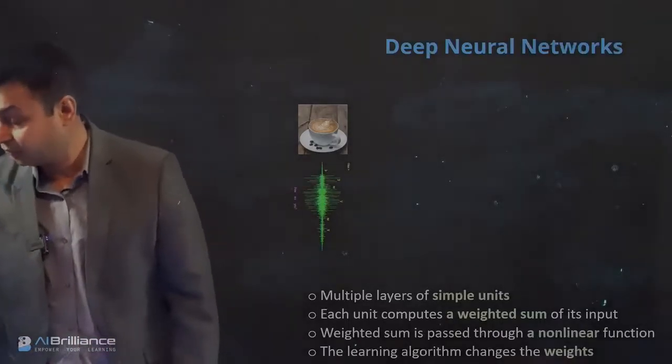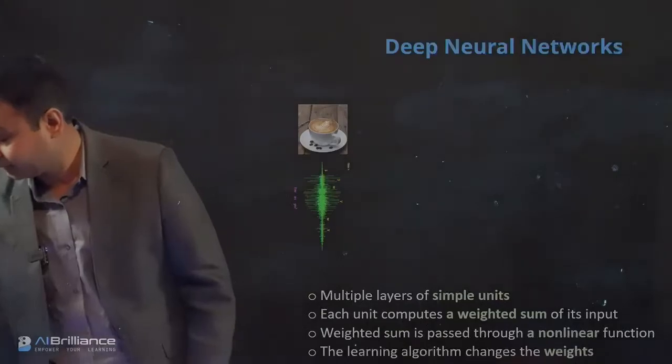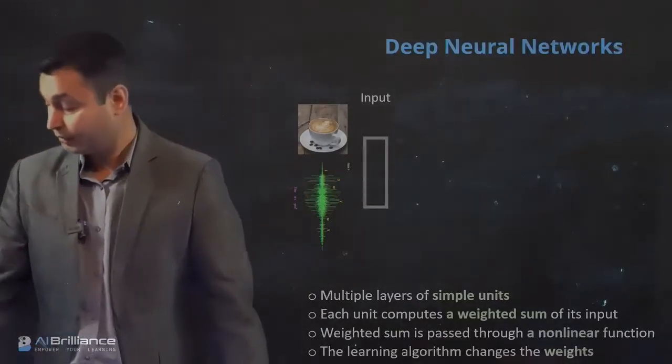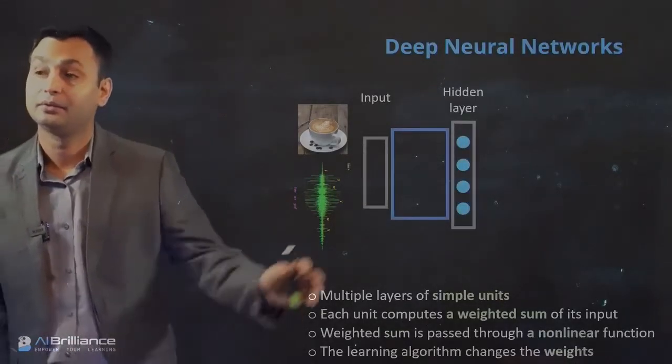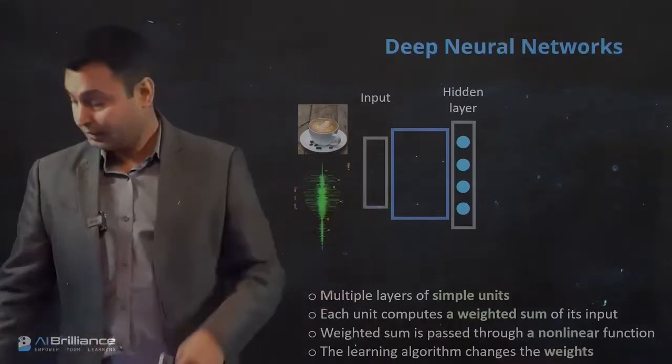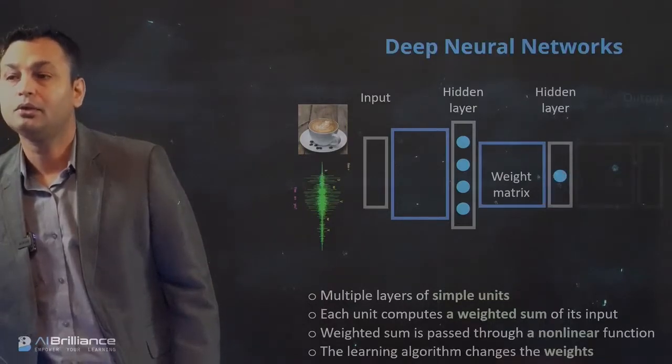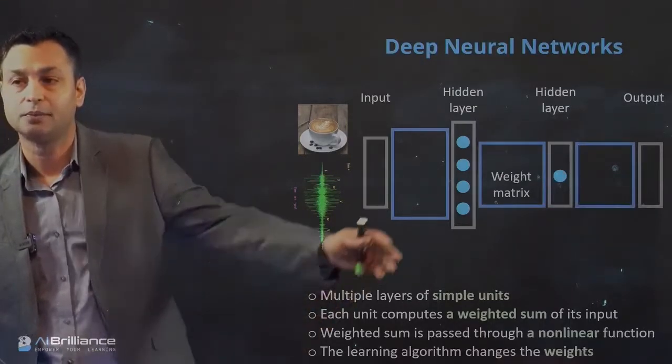Typically you will have input which might be images or sound features or something like that as the input, and then you will have this hidden layer. This hidden layer will have its own weights, and you might have multiple hidden layers finally before coming to your output.